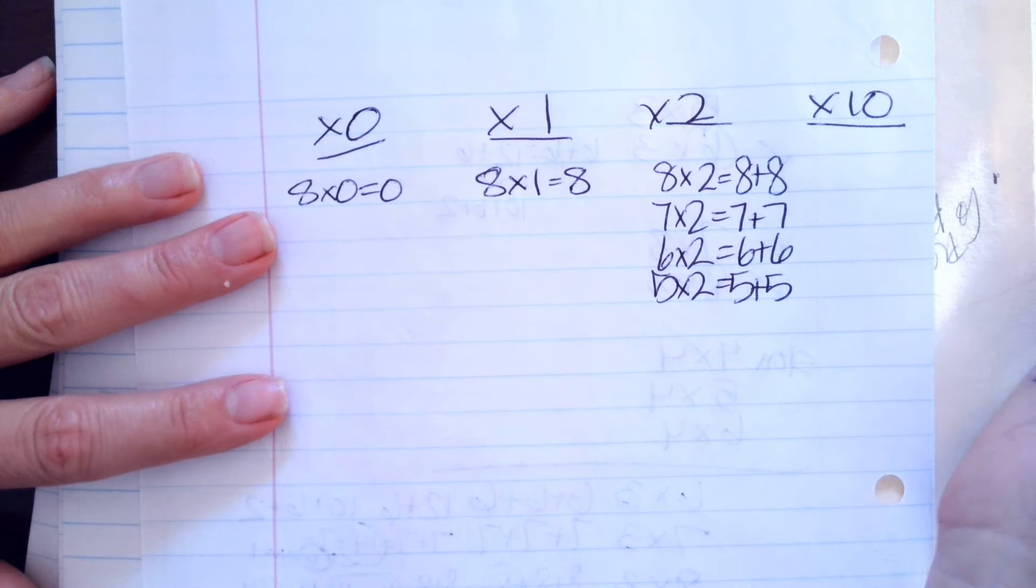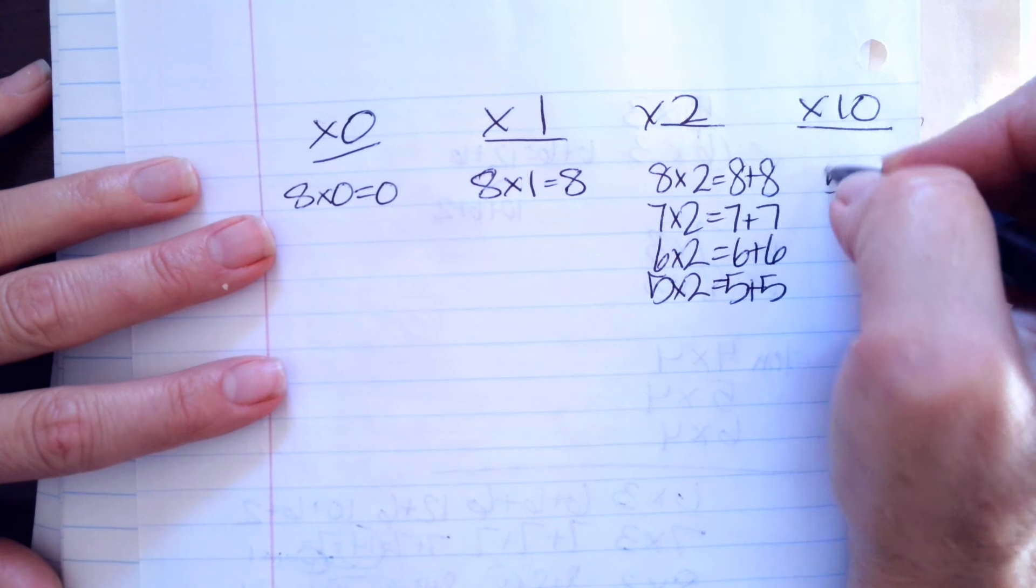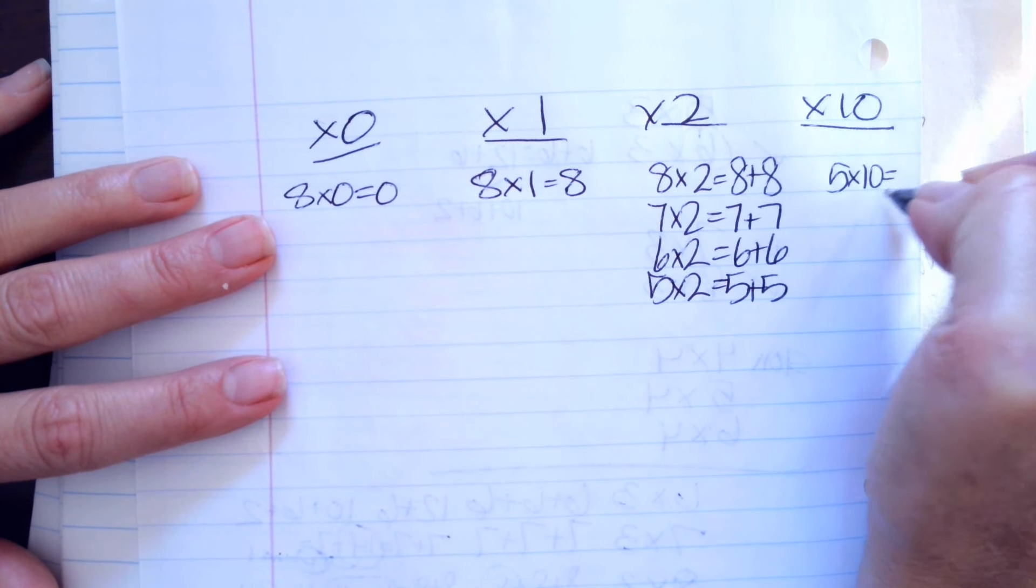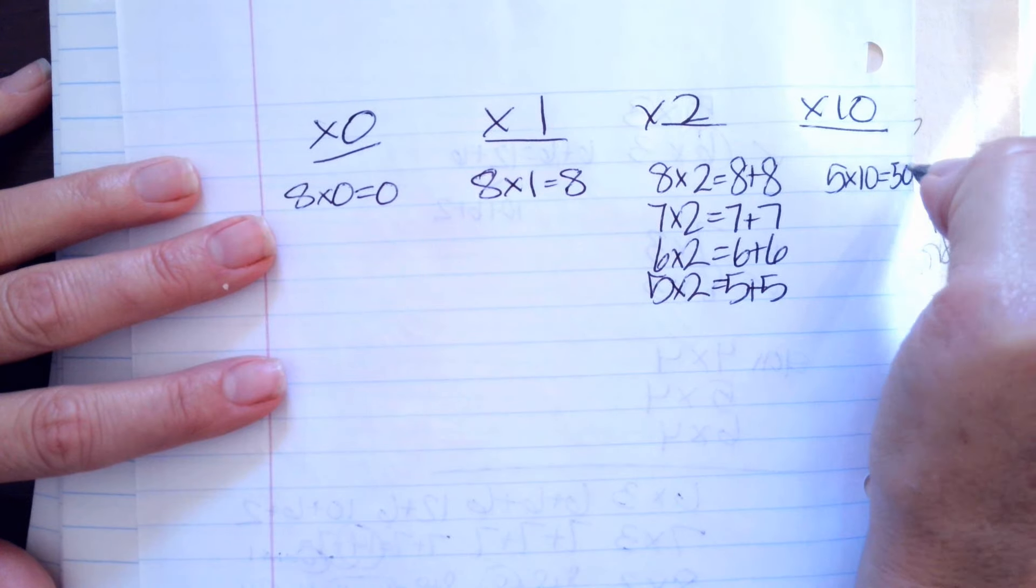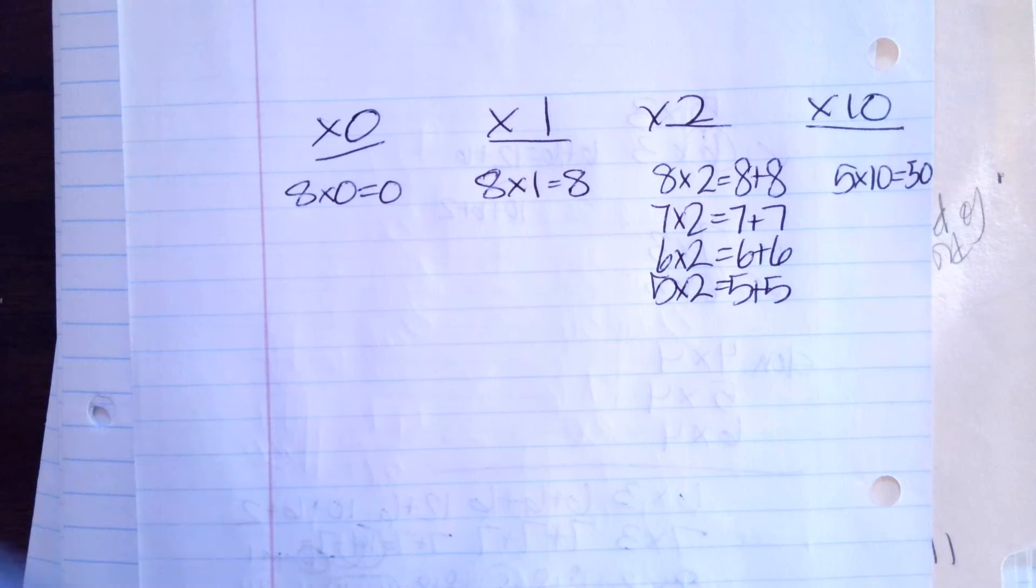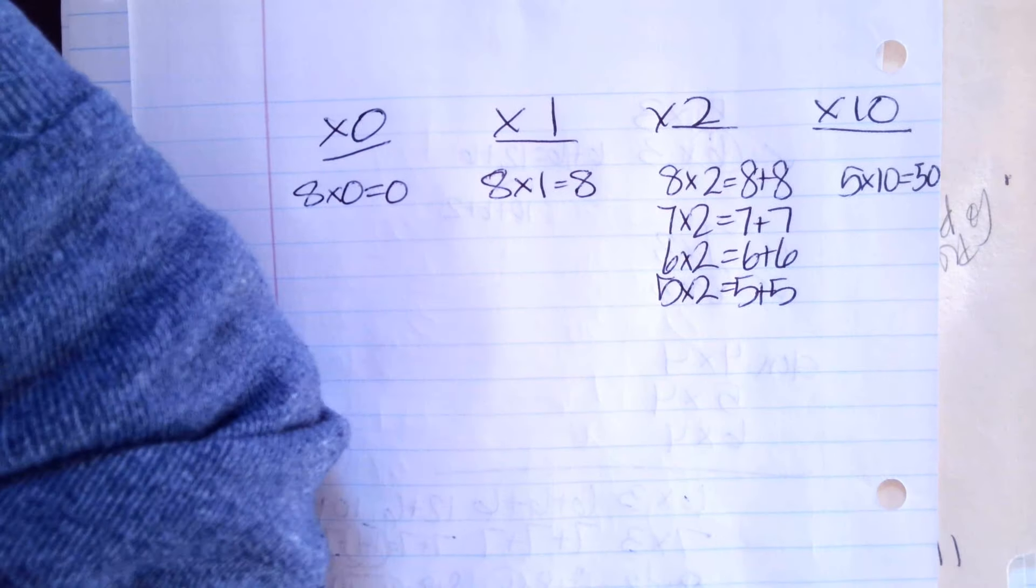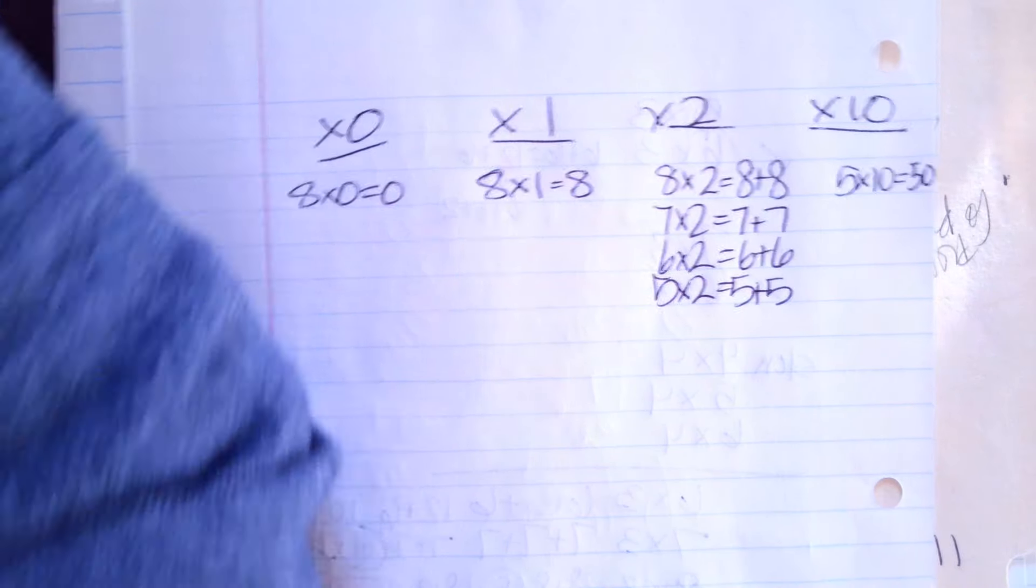And then our strategy for times 10 is you write a 0 after the number. So you're going to take the 5 and you're going to put a 0 after it. So like if it was 8 times 10.